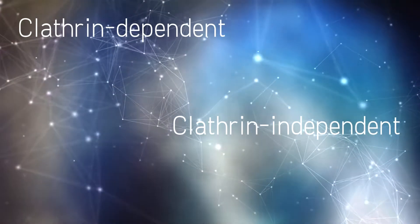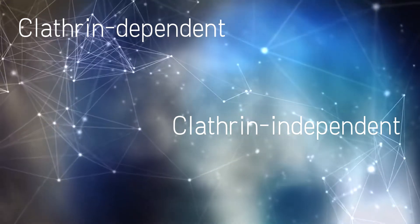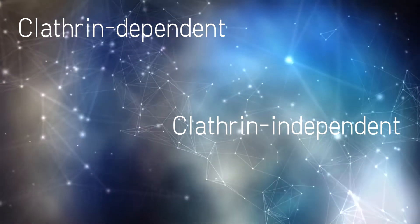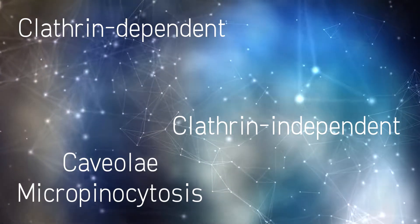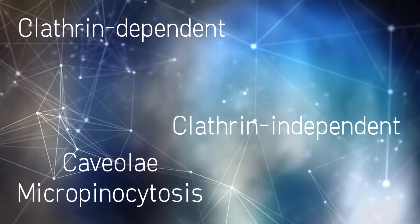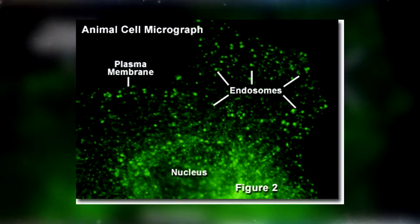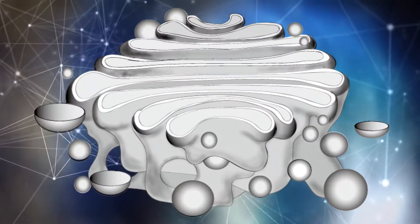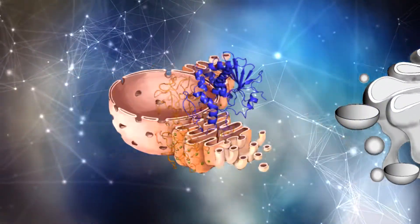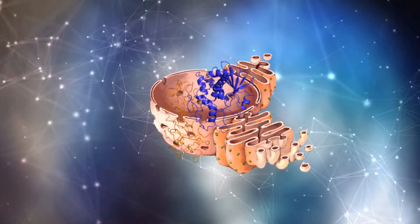Evidence for both clathrin-dependent and clathrin-independent endocytosis has been presented in the past. Clathrin-independent endocytosis involves lipid rafts known as caveolae and macropinocytosis, which is an invagination process utilizing very minute vesicles to transport macromolecules. Once within the cell, most ricin is deposited to the endosomes. However, around 5% remains in the perinuclear Golgi, from where retrograde movement takes the protein to the endoplasmic reticulum.